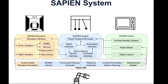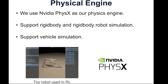Here is an overview of our SAPIEN system. We have annotated the PartNet Mobility dataset together with some robot models and object layouts to support our simulation. We have the SAPIEN engine, which is a physical engine that simulates physics — specifically NVIDIA PhysX — supporting rigid body simulation and robot simulation, which is a set of rigid bodies coupled with joint constraints. PhysX also supports vehicle simulation, with potential use in autonomous driving scenarios.